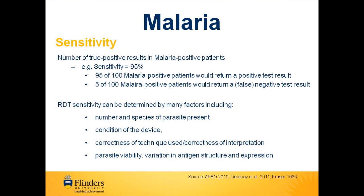Sensitivity is the number of true positive results in patients infected with malaria. For example, if the sensitivity of a device was 95% and we tested 100 malaria positive patients, 95 out of the 100 patients would give a positive result — the patient is truly positive for malaria infection — and the remaining 5 out of 100 results would be false negative results, meaning that the patient was infected with malaria, but the test came back negative. RDT sensitivity can be affected by many factors, such as the species of parasite, the number of parasites present or the parasite density, the condition of the device, the correctness of technique used by the operator, the parasite viability, and the variation in antigen structure and expression.